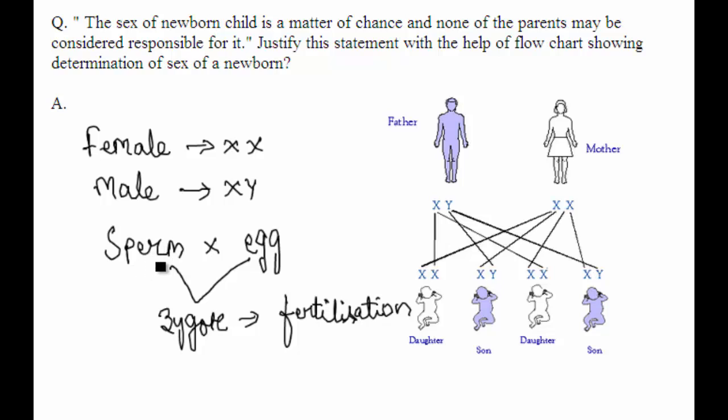So that's how there is an equal chance of fusion of either X or Y chromosome with the egg. So we can say that the sex of newborn child is a matter of chance and none of the parent is responsible for it.